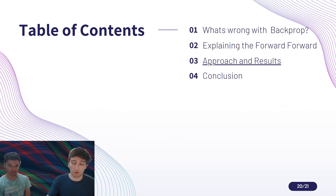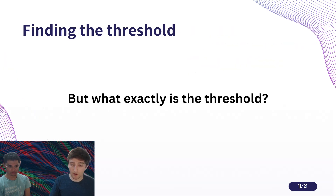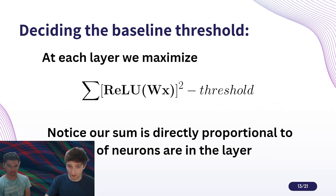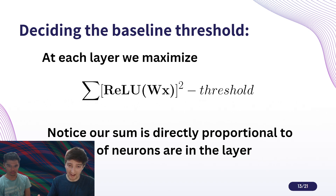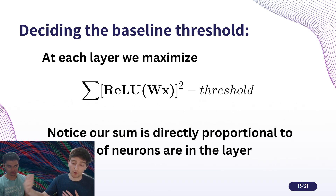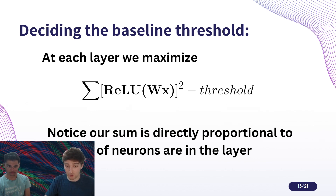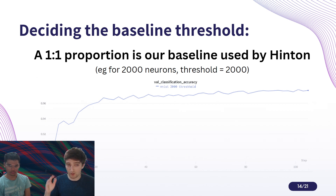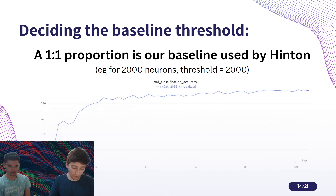We were wondering if we could do better, so we wanted to manipulate the threshold, which seemed to be a core component of the algorithm. There's a direct relationship between the threshold and the sum of squared activations — the sum of squared activations goes up the more neurons you have. In Hinton's original paper, he used a one-to-one ratio to match the threshold with the number of neurons in a layer, so if a layer had 2,000 neurons, he would choose a threshold of 2,000.